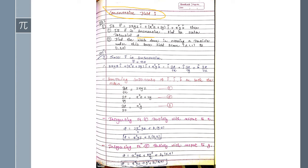Expanding the gradient: F̄ equals î (∂φ/∂x) plus ĵ (∂φ/∂y) plus k̂ (∂φ/∂z). Now compare the coefficients of î, ĵ, and k̂ on both sides. So we get: ∂φ/∂x = 2xyz — call this equation 1. Similarly write ∂φ/∂y and ∂φ/∂z for equations 2 and 3.